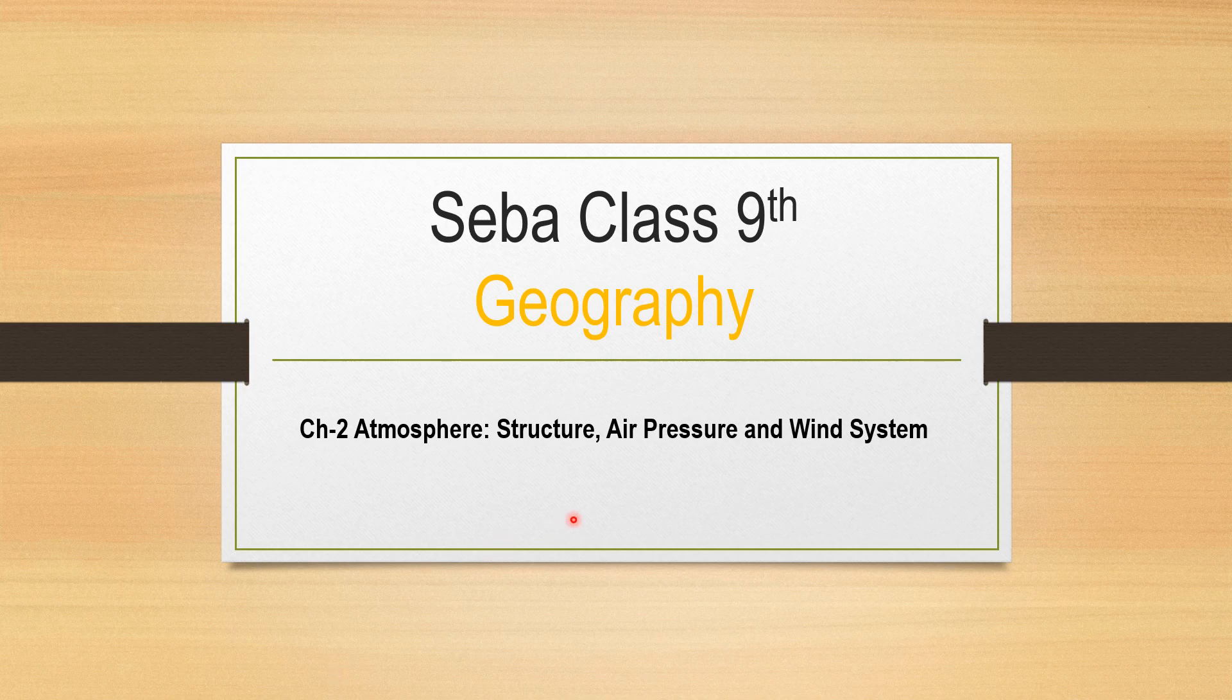Hello and welcome to history classes. This is class 9th SEBA Geography textbook and we are doing chapter number 2: Atmosphere, Structure, Air Pressure and Wind System. This chapter's first two parts are already uploaded. You can go and check it out. So let us begin today's class.